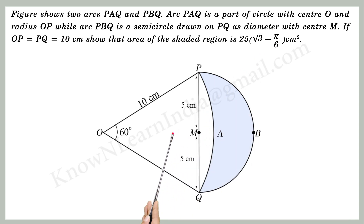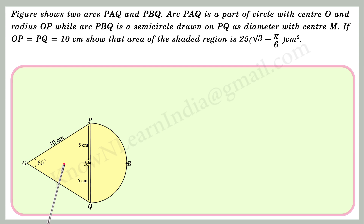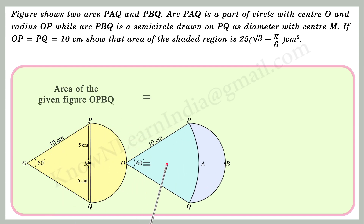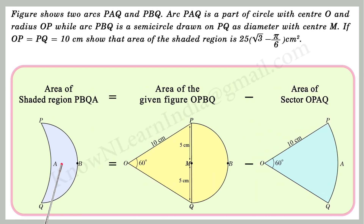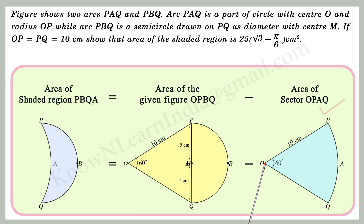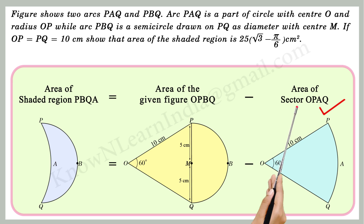Let's see how we can solve this. We can see that the area of the given figure Opbq is equal to the area of the sector Opaq plus the area of the shaded region Pbqa. Therefore, the area of the shaded region Pbqa is equal to the area of the figure Opbq minus the area of the sector Opaq. As we know the radius and the angle, we can find the area of the sector Opaq.